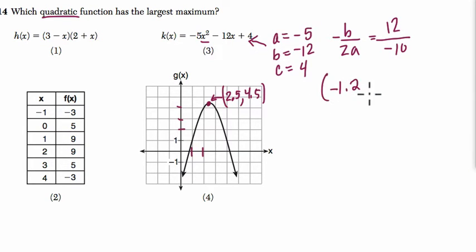Now that's the x value of the vertex. To find the y value, we always plug the x in. So we find k of negative 1.2. And if we do that, if we plug in negative 1.2 into this expression, what you should get is 11.2. That's the height of this function.